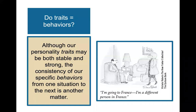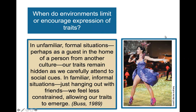Although our personality traits may be both stable and strong, the consistency of our specific behaviors from one situation to the next is another matter. Our behavior is influenced by the interaction of our inner disposition with our environment — that's the person-situation controversy. In unfamiliar, formal situations, our traits might remain more hidden as we attend to new social cues. In familiar, informal situations like hanging out with friends, we feel less constrained and allow our traits to emerge.